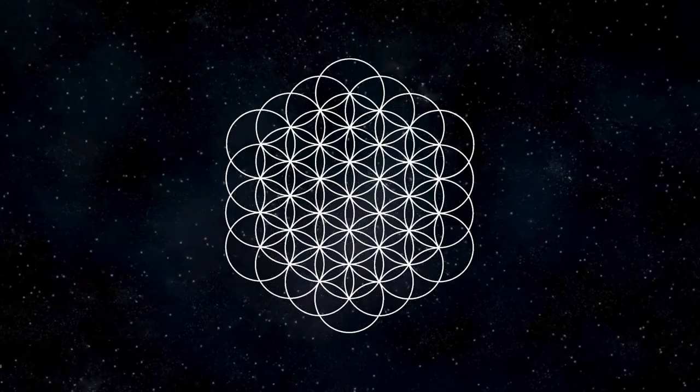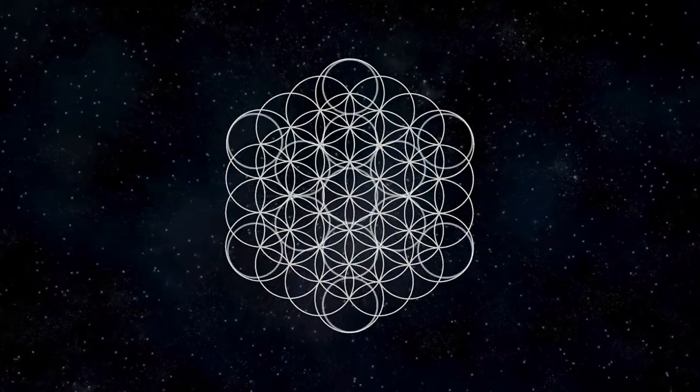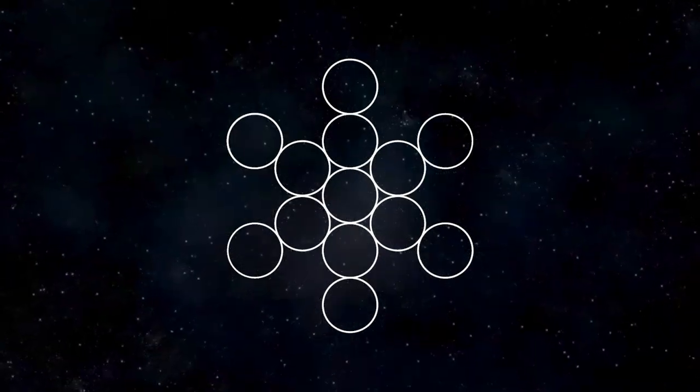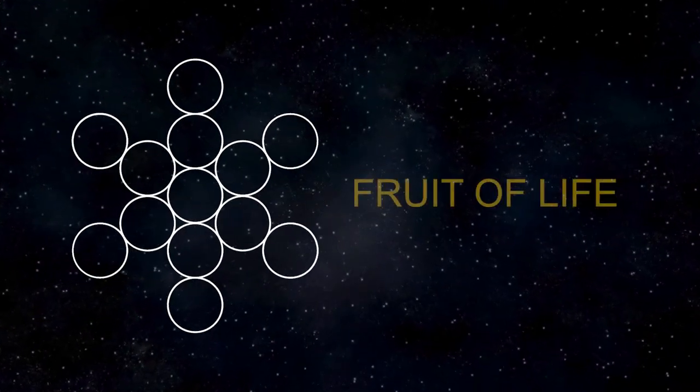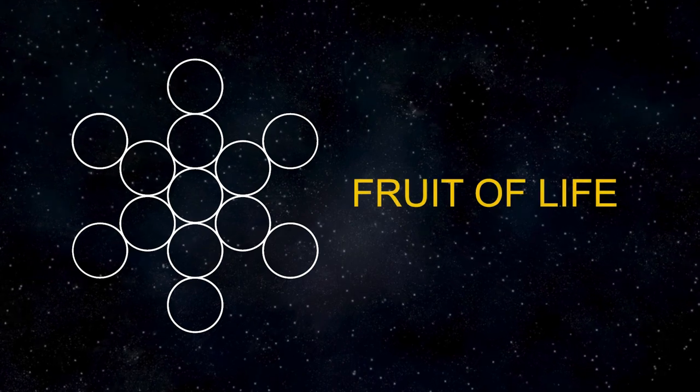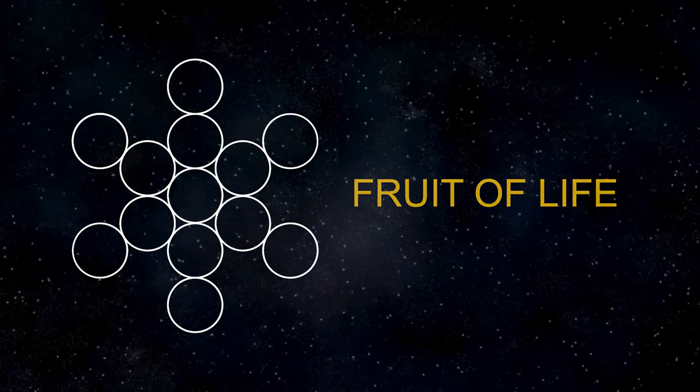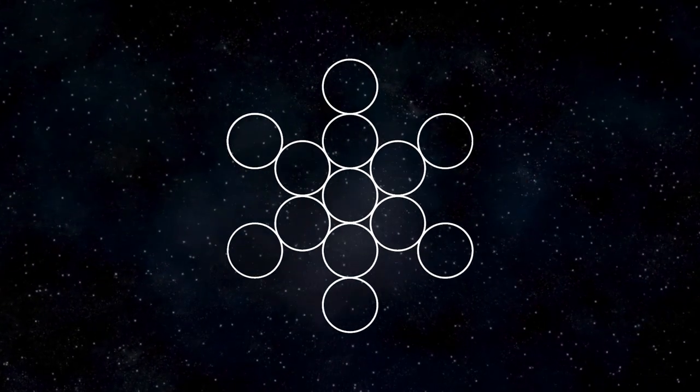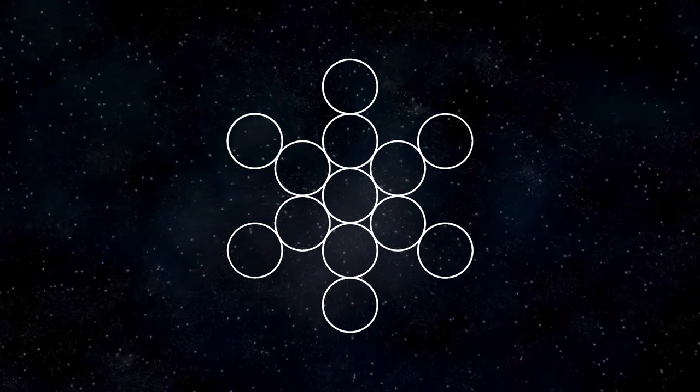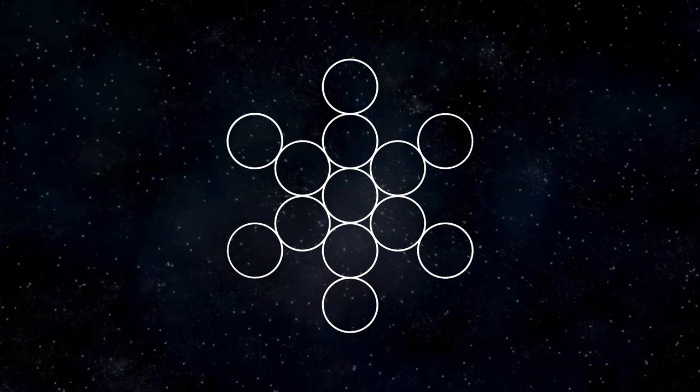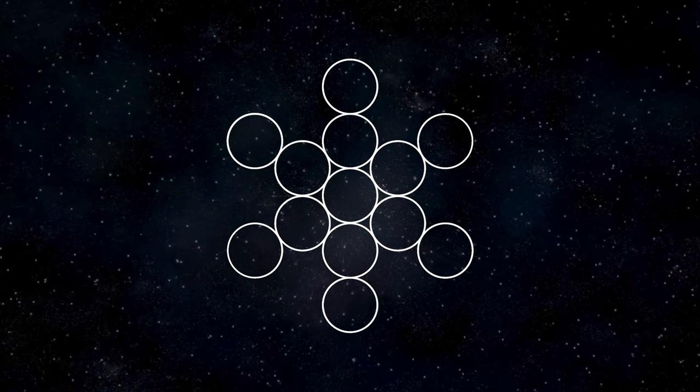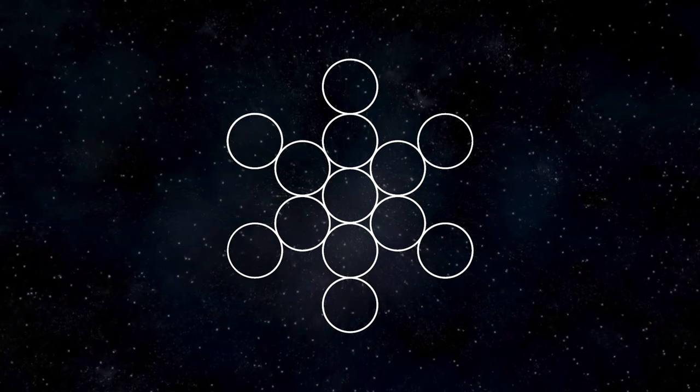When the Flower of Life is completed, it reveals the Fruit of Life. Composed of thirteen circles, it is seen as one of the fundamental blueprints of the universe, from which all forms can be derived. The number thirteen in the Fruit of Life is associated with femininity, fertility, and abundance in various spiritual traditions.